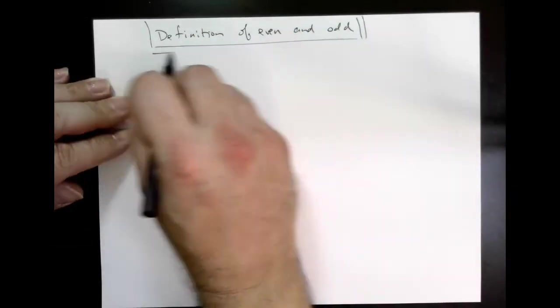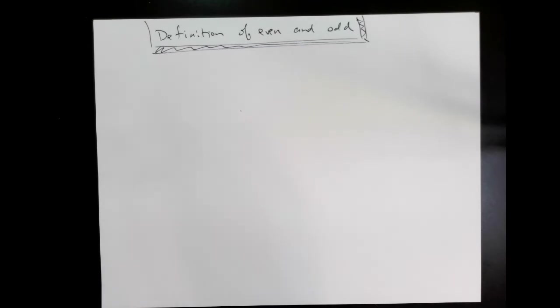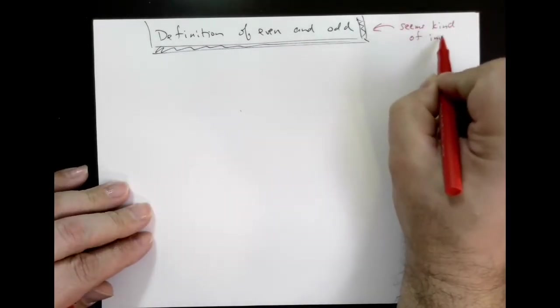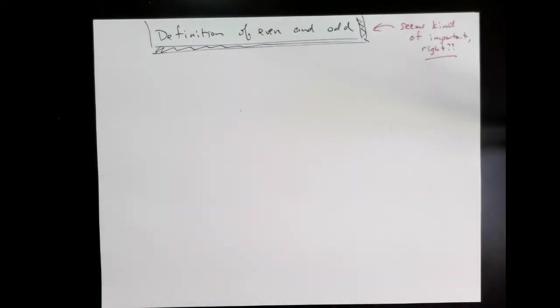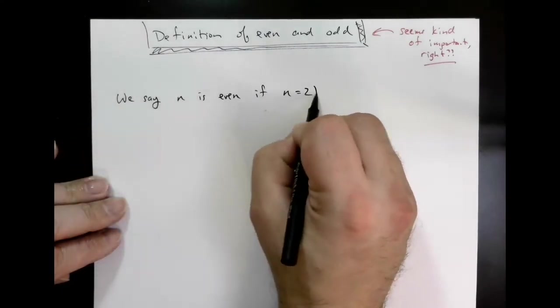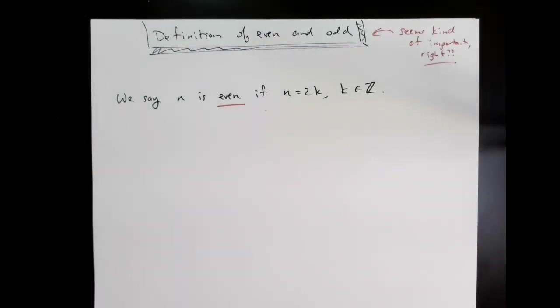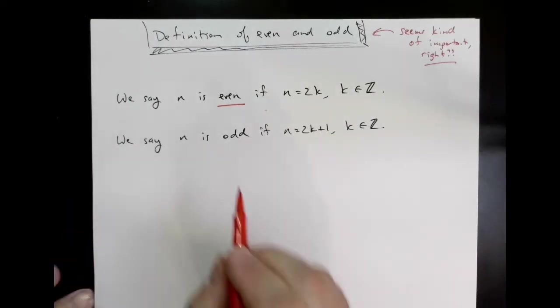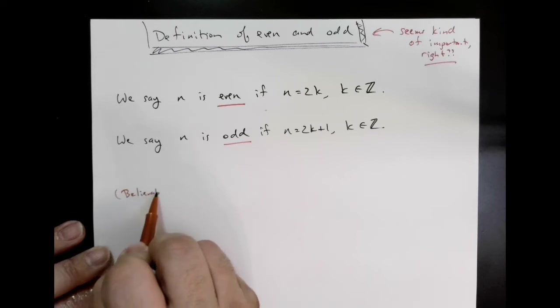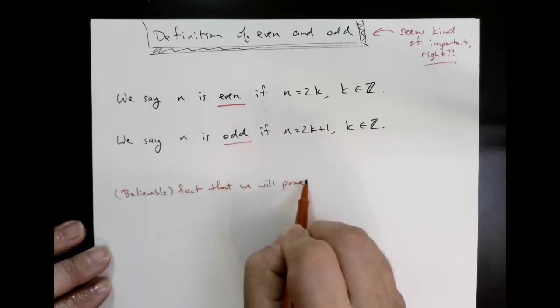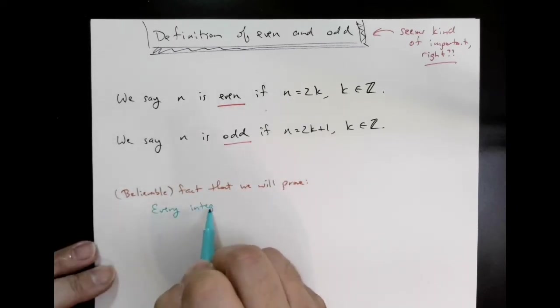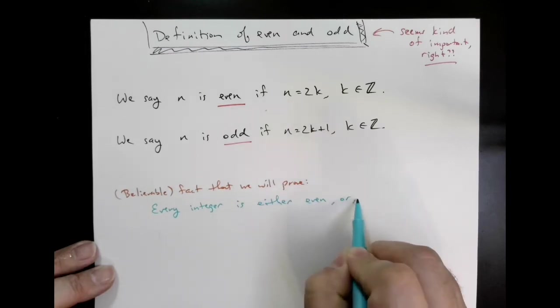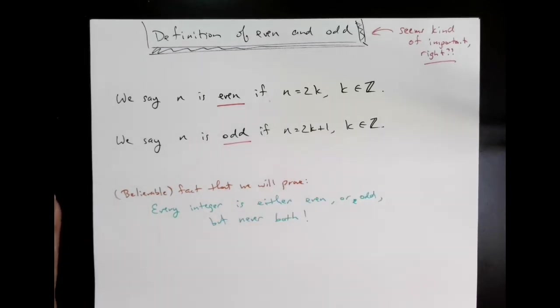Now first let's take a quick digression since we'll be using these concepts throughout today and future lectures. Let's formally define even and odd numbers. A number n is even if n equals 2 times k where k is an integer and a number n is odd if n equals 2k plus 1 where k is an integer. Now just accept for now every number is even or odd, no numbers are both, no numbers are neither. We can prove this but it'll take us a bit off topic for today.